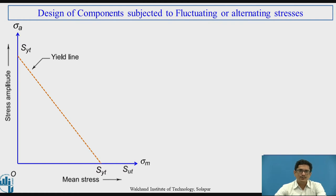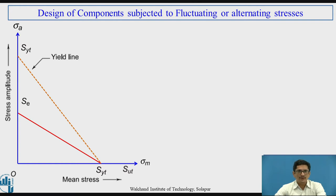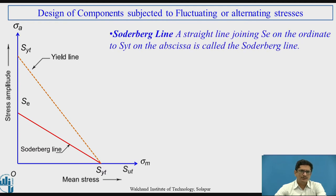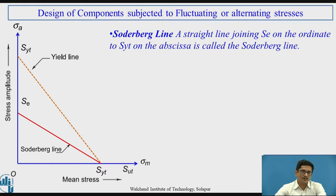I need to put the SUT value on the x-axis and the SE value on the y-axis, and join the line from SE to SYT. This line is called the Soderberg line. The Soderberg line is the line which joins the endurance limit SE on the ordinate (y-axis) to SYT on the abscissa (x-axis). This line is well below the yield line.